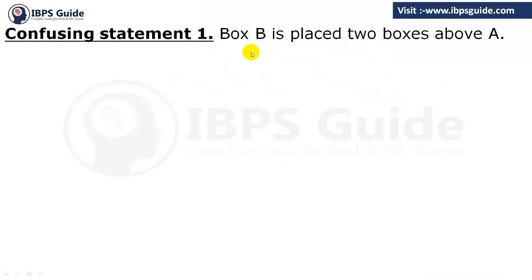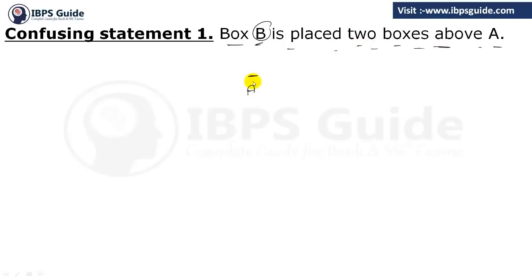The first confusing statement is: box B is placed two boxes above A. What this statement actually means is that if you have box A somewhere, box B is two boxes above. Two boxes above means the first box above A, then the second box. What students actually do is write A, then leave two boxes, then place B. That is incorrect — that would be three boxes above, because the second box above A is where B belongs.